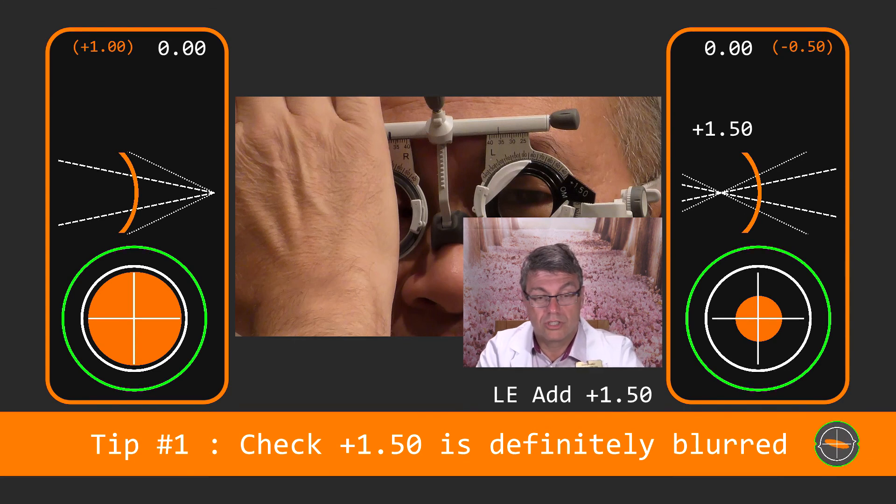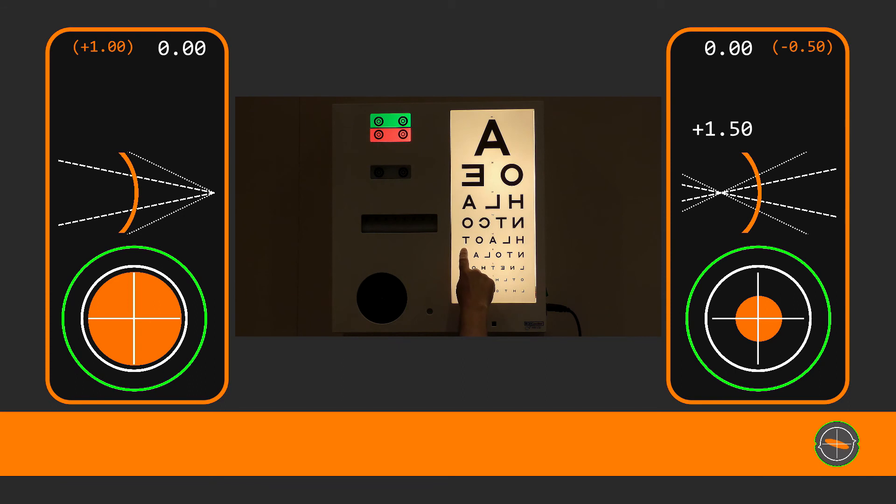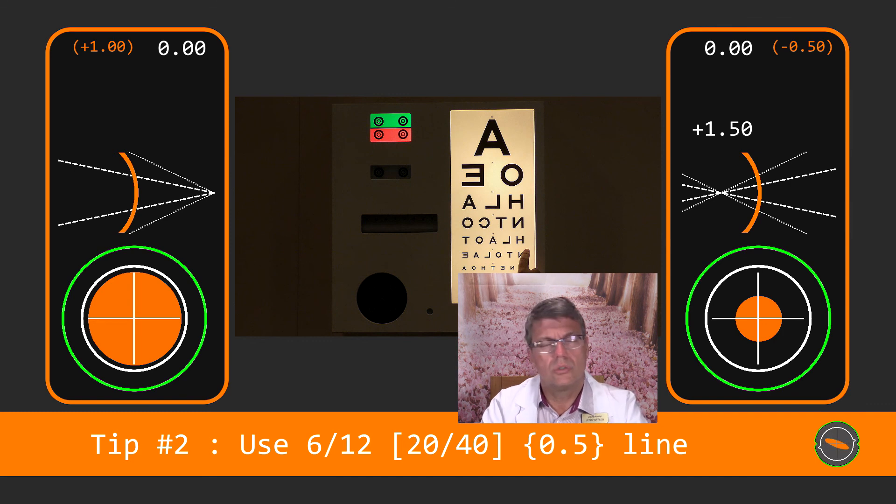Let's continue with the refraction. And just have a look at that line there. Always choose a line that the patient can easily see. Don't go too small. This makes it easy for the patient to check for differences. My favourite line is the 612 line which I used in this case.